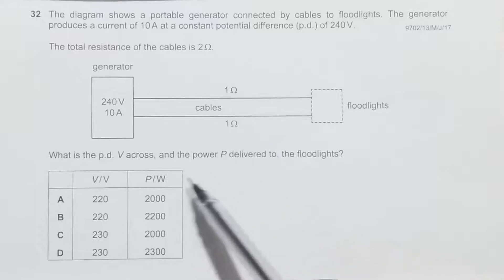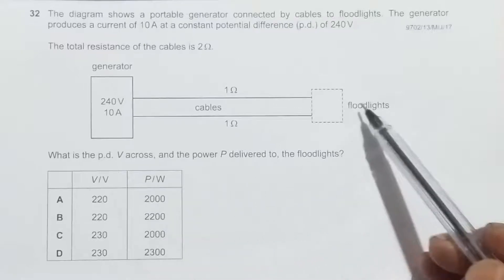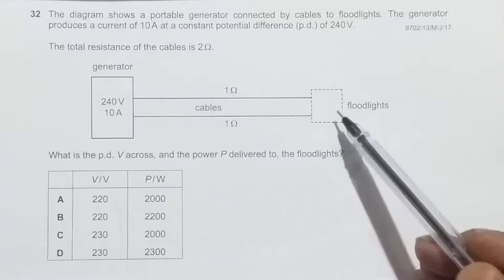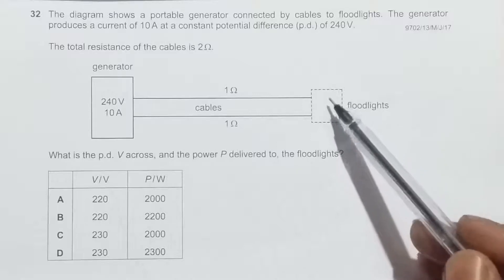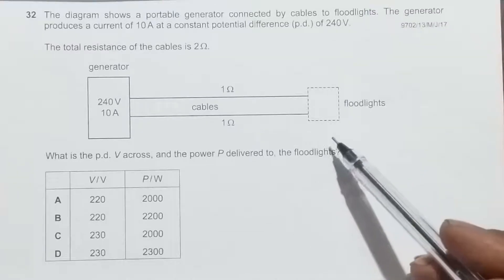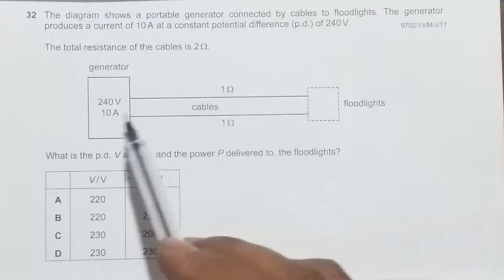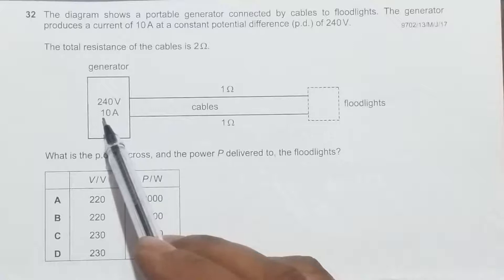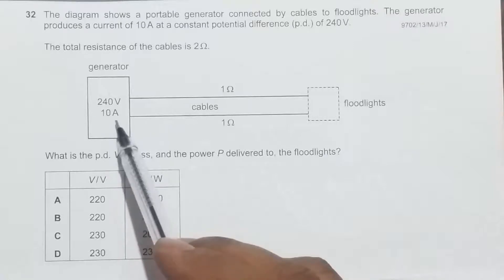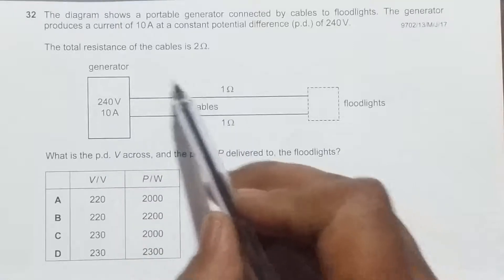We have to find the PD across the floodlights and the power delivered to the floodlights. Let us first remember that the current delivered by the source is 10 amperes.